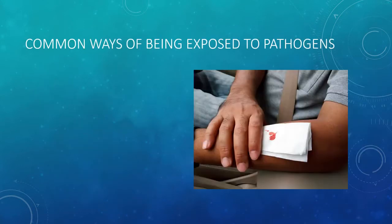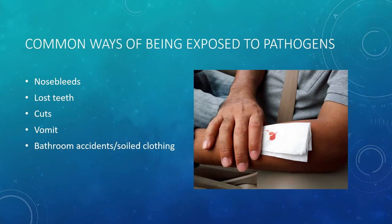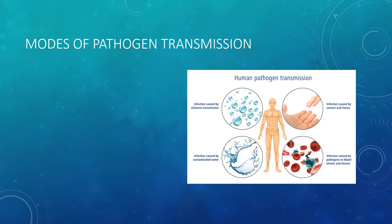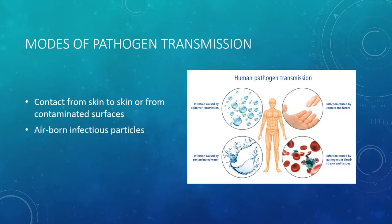Common ways of being exposed to pathogens include nosebleeds, lost teeth, cuts, vomit, bathroom accidents and soiled clothing, contaminated surfaces, and tissues and bandages. Modes of pathogen transmission include contact from skin to skin or from contaminated surfaces, airborne infectious particles, and droplets from sneezing, coughing, or talking.